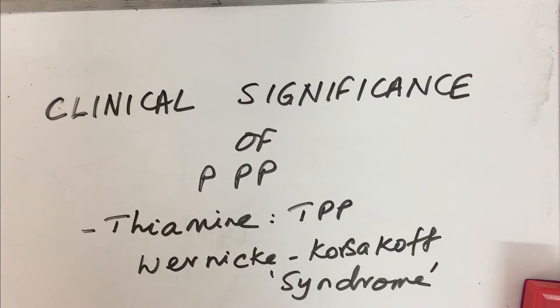Also remember that alcoholics have a deficiency of this thiamine pyrophosphate, so that can also have an effect on pentose phosphate pathway, production of NADPH. You have seen the role of NADPH, so on a long term it can have effect on all these.